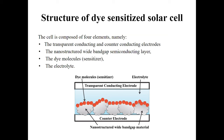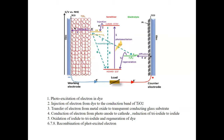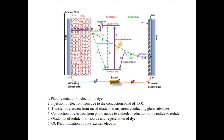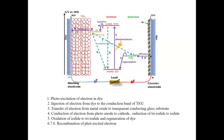The working principle of a dye-sensitized solar cell is dependent on light harvesting. When solar radiation hits the dye molecules, the electron transfers from HOMO to LUMO, as shown in step one of this slide. Then the photo-excited electron jumps to the conduction band of the semiconductor — there are many semiconductors such as titanium dioxide, zinc oxide, and so on.